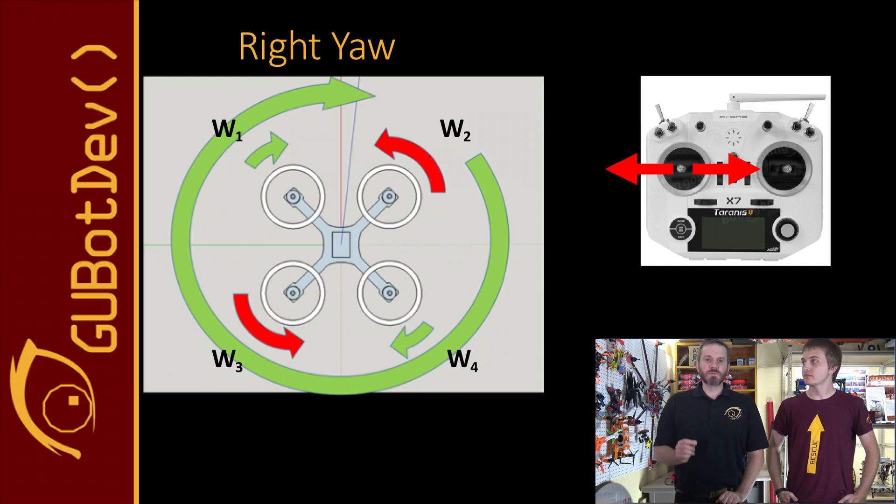On a Mode 2 transmitter, yaw is controlled by left and right movement of the left stick. When you move the left stick left and right, the throttle to two motors spinning in one direction are increased, while the throttle to the two motors spinning in the opposite direction are decreased. This is what causes the drone to induce a flat yaw without losing altitude. A flat yaw is when the drone rotates around the z-axis or the vertical axis extending in both directions from the top and bottom of the drone.